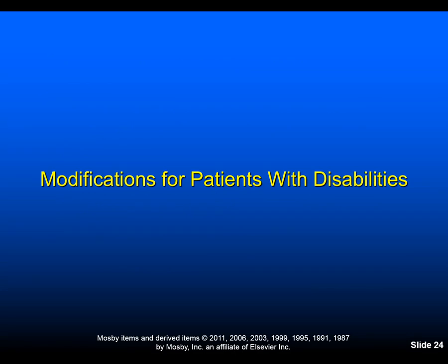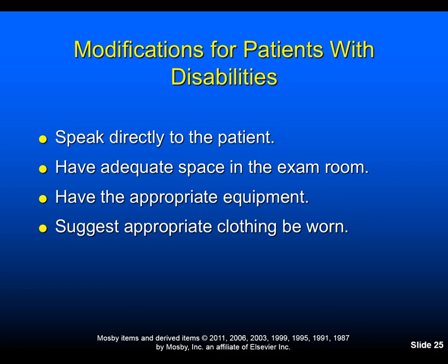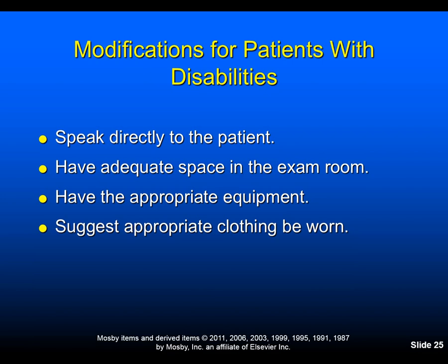For patients with disabilities, we should speak directly to the patient, have adequate space, have appropriate equipment, and suggest appropriate clothing. Depending on what kind of examination is necessary — for instance, for a pelvic exam, a woman could wear an easily removable skirt or pants; a button-up or zippered shirt would facilitate a breast exam. These things can be suggested to the patient or caregiver ahead of time in order to make physical assessment easier.